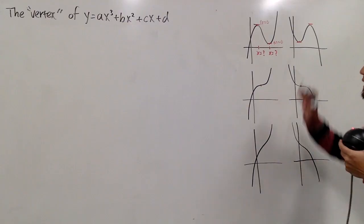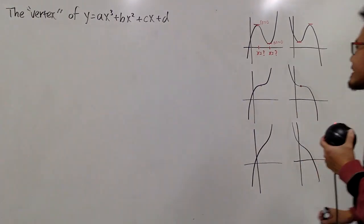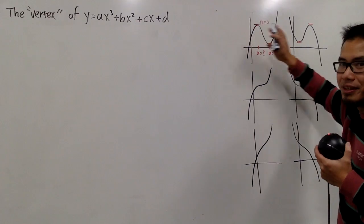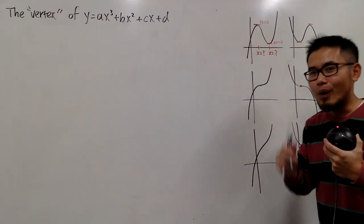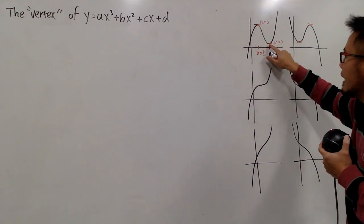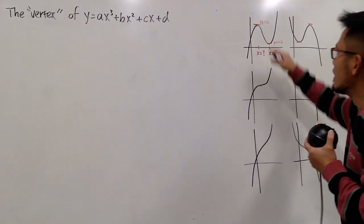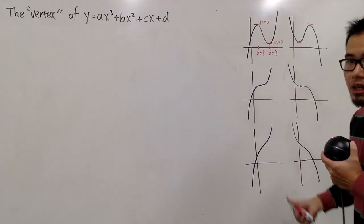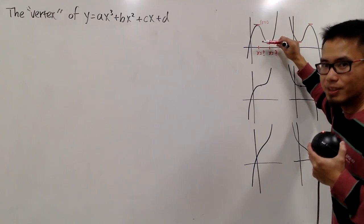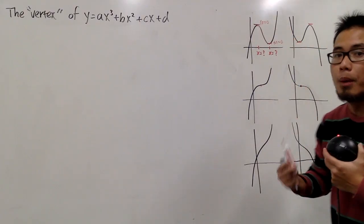Let's talk about three main categories of how a cubic curve will look. The first situation is the pretty curve. The cubic curve goes up, stops, goes down, stops, and goes up again. Notice, just like in the previous video, if you place the marker at these two points, the marker will become horizontal — meaning we will have horizontal tangent lines, meaning the first derivative at these two x-values will be zero.